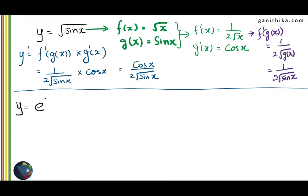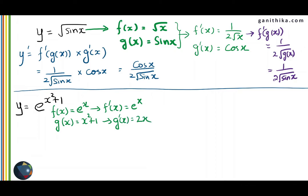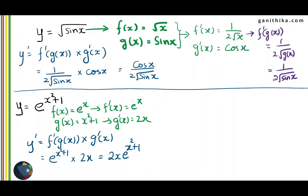One more example: e to the power of x square plus 1. Identify the two functions: e to the power of x is the outer function, and x square plus 1 is plugged into it. Therefore f of g of x is e to the power of x square plus 1. f dash of x is e power x, and the derivative of x square plus 1 is 2x. We need f dash of g of x, which means e to the power of x becomes e to the power of x square plus 1, and g dash of x is 2x. Multiplying them you will get 2x times e to the power of x square plus 1 as the derivative.